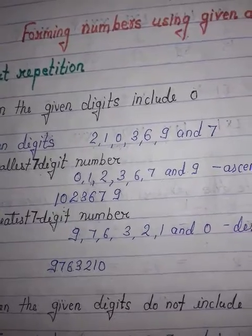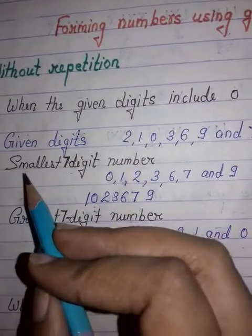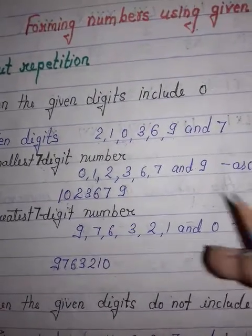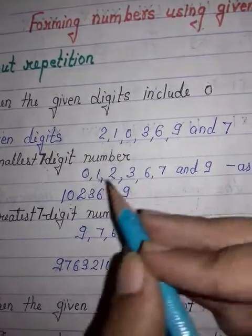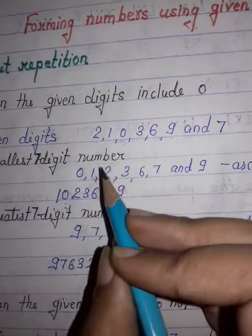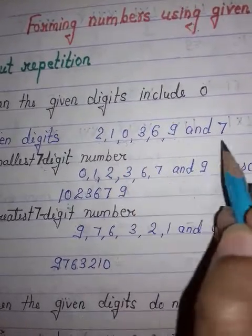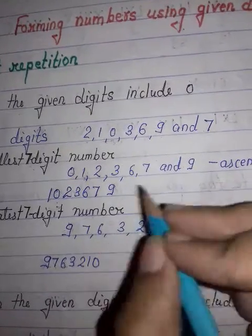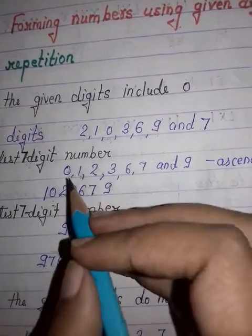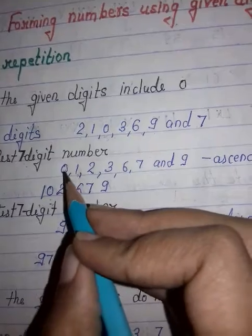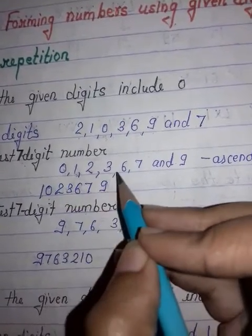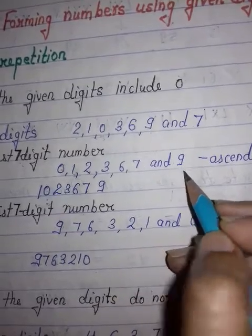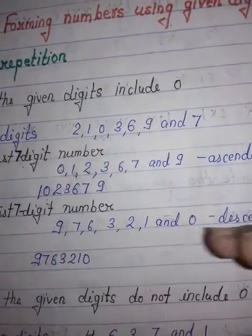Let us see how to form the smallest seven-digit number. For this, arrange the given digits in ascending order. Ascending means from smaller to greater digit. So the arrangement here is 0, 1, 2, 3, 6, 7, and 9. This is the ascending order.